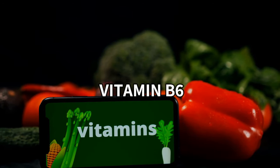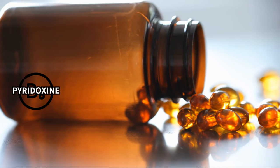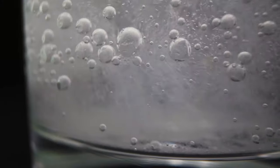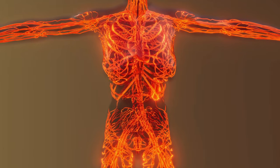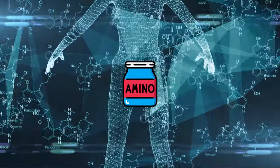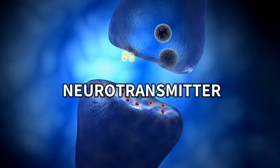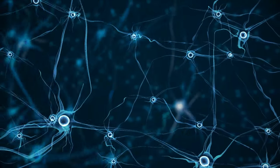Vitamin B6, also known as pyridoxine, is a water-soluble vitamin that plays a crucial role in various processes in the body, including amino acid metabolism, neurotransmitter synthesis, and overall nerve health.